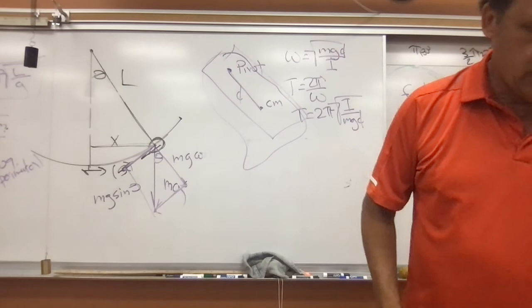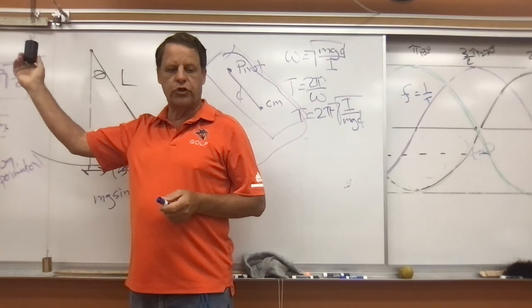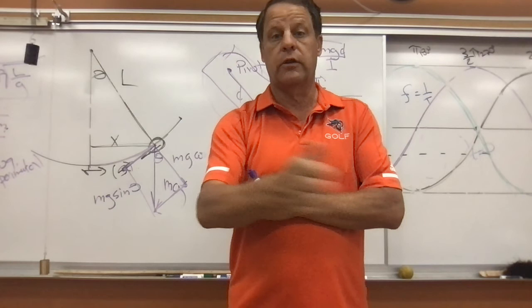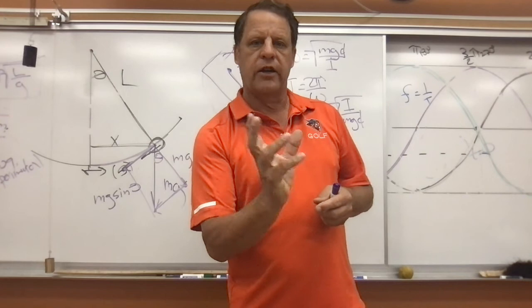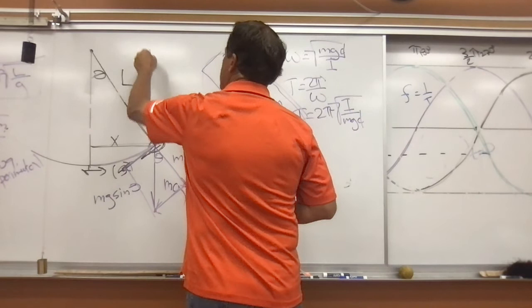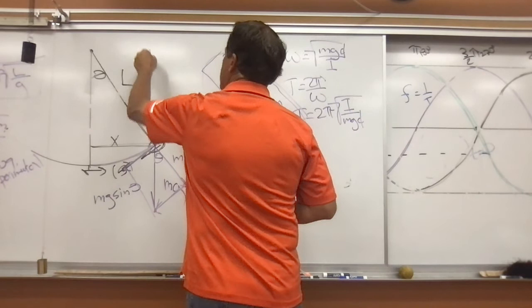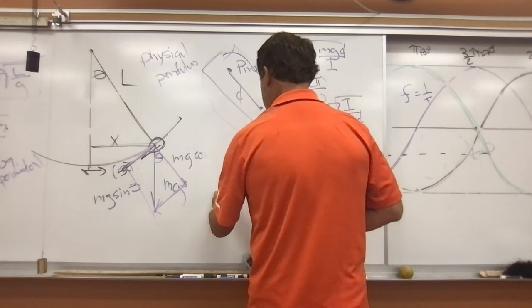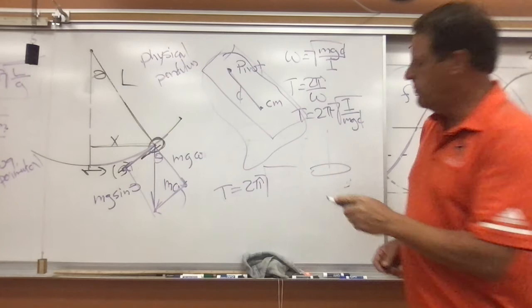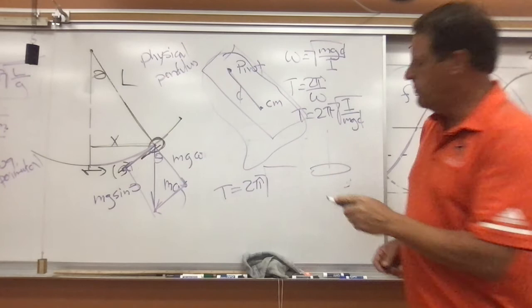We can also have a torsional pendulum, where a spring causes vibration back and forth — this is often the case inside a wristwatch, which has a flat or coil spring wound around that oscillates. For a torsional pendulum, the period is equal to two pi times the square root of the moment of inertia I divided by kappa, where kappa is essentially a constant very much like K for a spring. Alright, we'll talk to you next time — have fun.